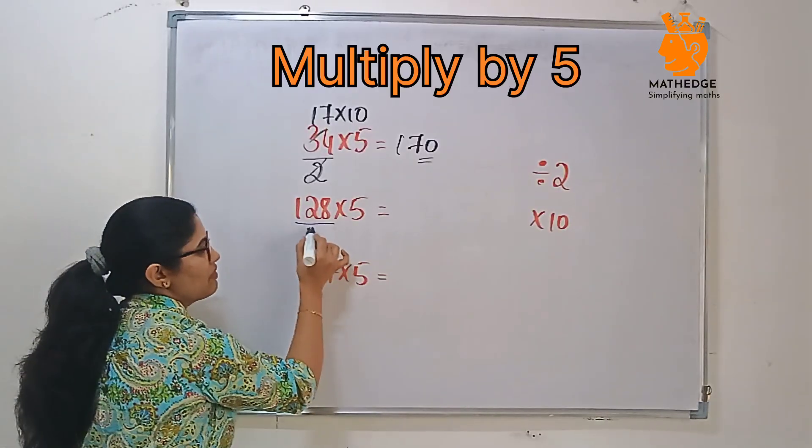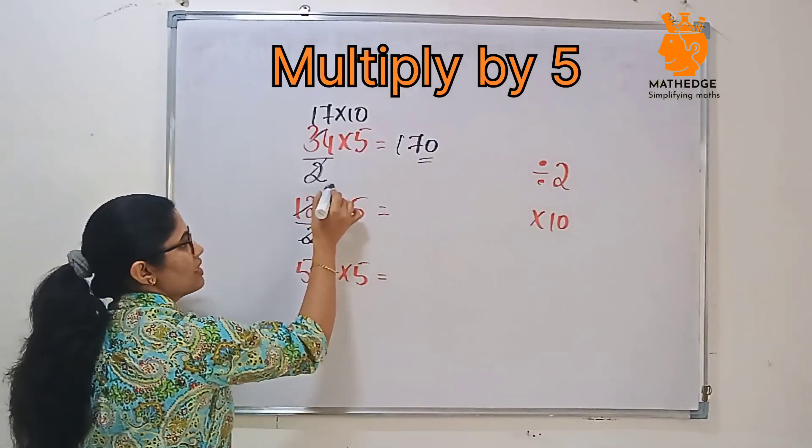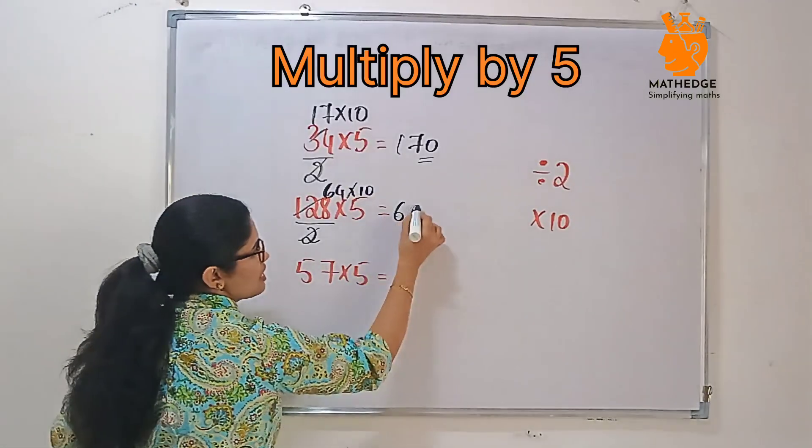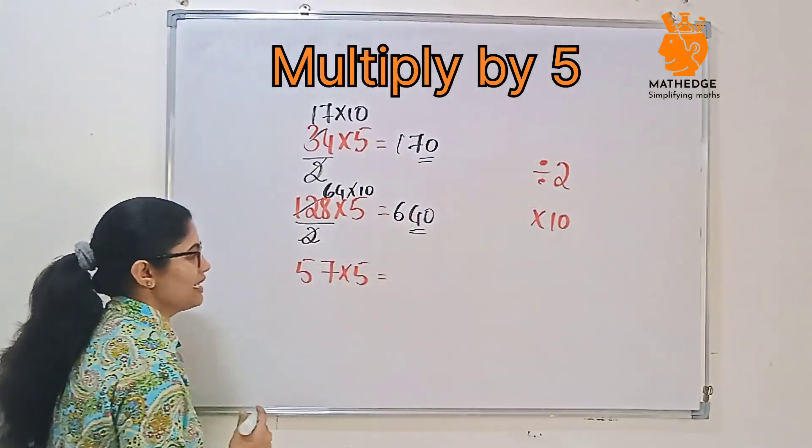Then, here also, 128 multiply by 5, divide by 2. 2 ones, then 2 sixes, 2 fours. Then multiply by 10. 640. Right?